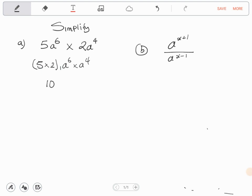Now according to the rules of indices, when you are multiplying bases that are the same, you add the powers. So we are going to have a 6 plus 4.